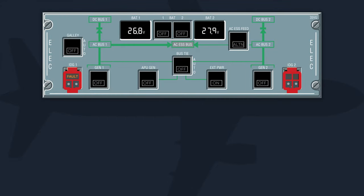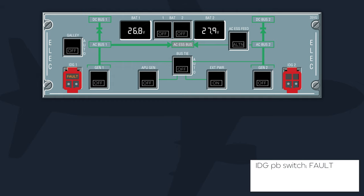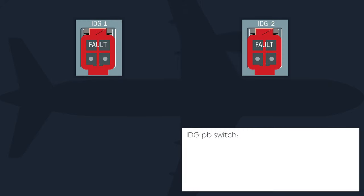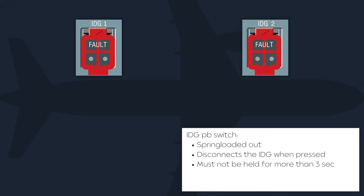When an IDG malfunctions, it can be disconnected from the engine using its respective IDG push button switch on the ELEC panel. The guarded IDG 1 and IDG 2 push button switches will indicate fault and an ECAM caution is generated if the IDG outlet oil overheats or IDG oil pressure is low. The low oil pressure warning is inhibited when engine N2 is low to prevent nuisance warnings. The spring-loaded IDG push button disconnects the IDG from its driveshaft when pressed momentarily and should not be held for longer than 3 seconds to prevent damage. Maintenance personnel only can reconnect the IDG.